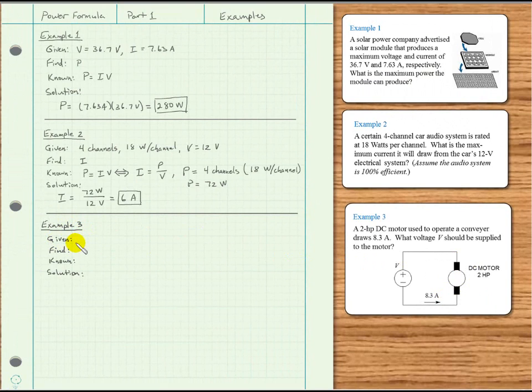Let's talk about given information. We have current equal to 8.3 amps, and we have 2 horsepower.